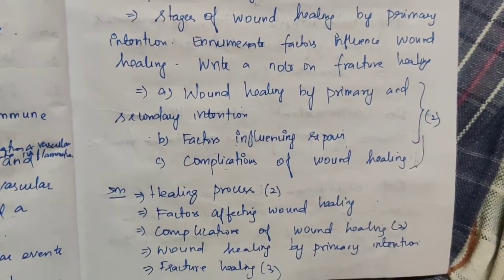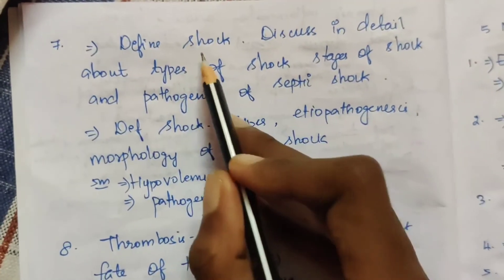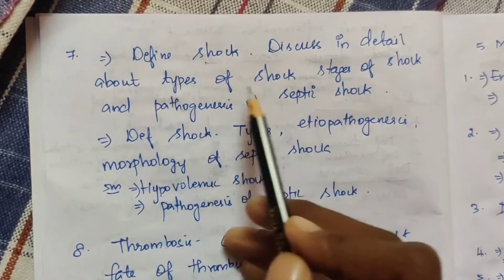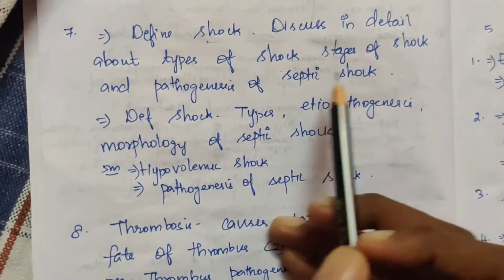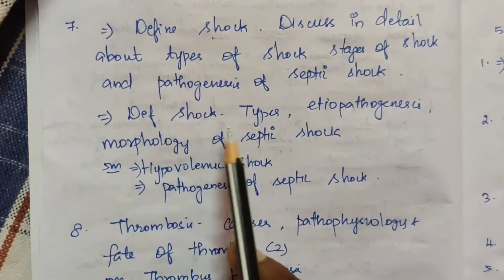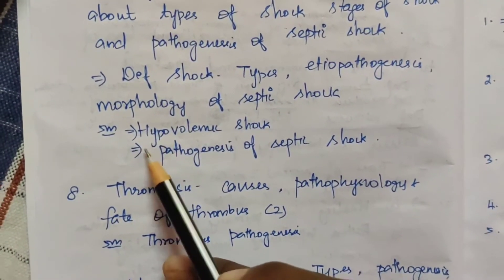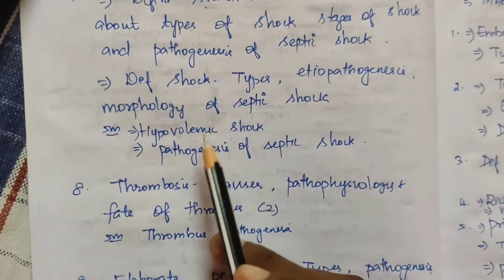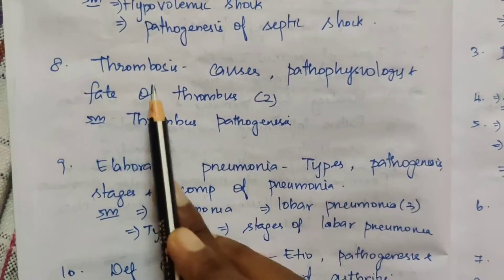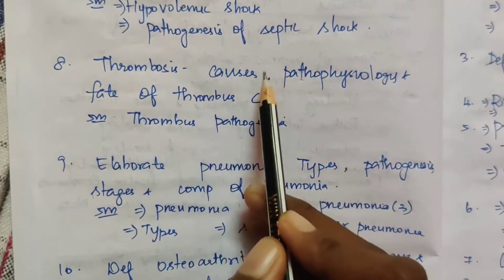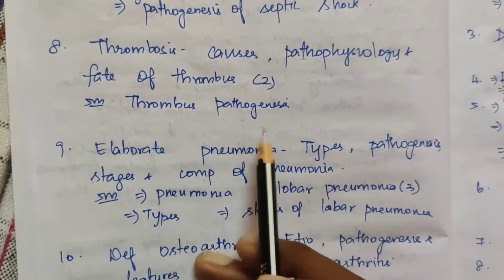The seventh topic is shock. Define shock, discuss in detail the types of shock, stages of shock, and pathogenesis of septic shock. Define shock — types, pathogenesis, and morphology of septic shock. Hypovolemic shock and pathogenesis of septic shock are also covered. The eighth topic is thrombosis. Define thrombosis, its causes, pathophysiology, and fate of thrombosis — appeared 2 times. For 5 marks: thrombosis and pathogenesis.